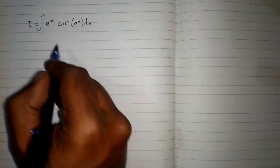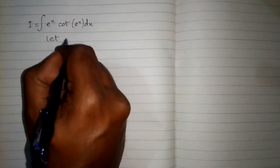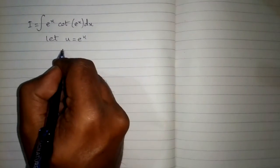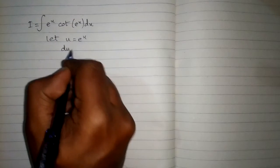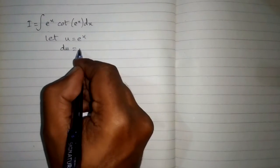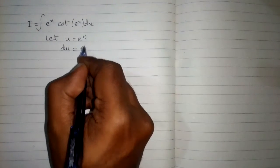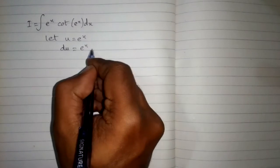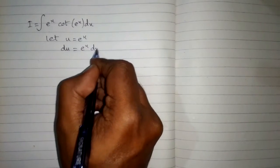Suppose this integral is i, and we will suppose that e^x is u. So let u equal e to the power x. The differential du is equal to the derivative of e to the power x, which is e to the power x, multiplied by dx.